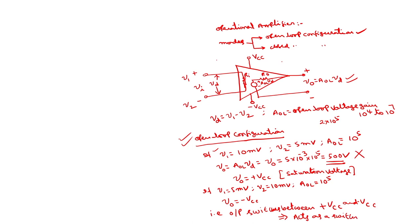We cannot use this operational amplifier in open loop configuration for amplification applications. However, open loop configuration does have some applications such as the comparator — to implement a comparator using an op-amp, we must operate it in open loop. A second application is the waveform generator. Except for these, in most applications we use the op-amp in closed loop configuration.